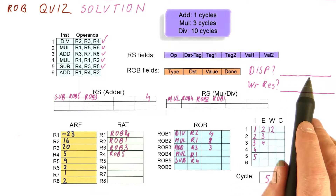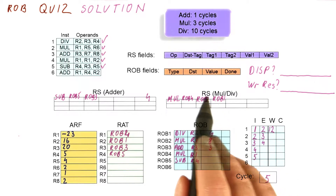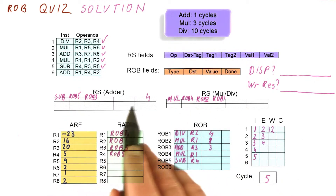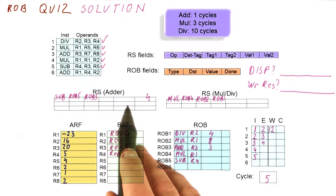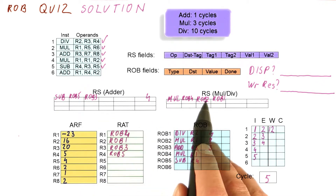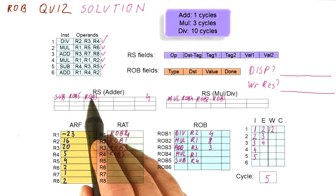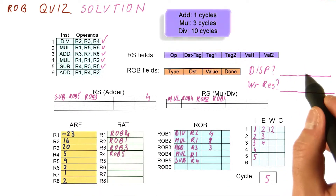Let's look at the solution for this part of the quiz. Do we dispatch an instruction in cycle five? No, we do not. All of these instructions are waiting for something to be broadcast. Until we actually broadcast some results and these instructions can capture the values, they will not be able to dispatch. Both of them are waiting for something, so this should be empty.